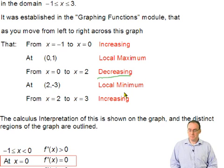At (2,-3), there's a local minimum. And from x = 2 to x = 3, as we saw, the graph is increasing.